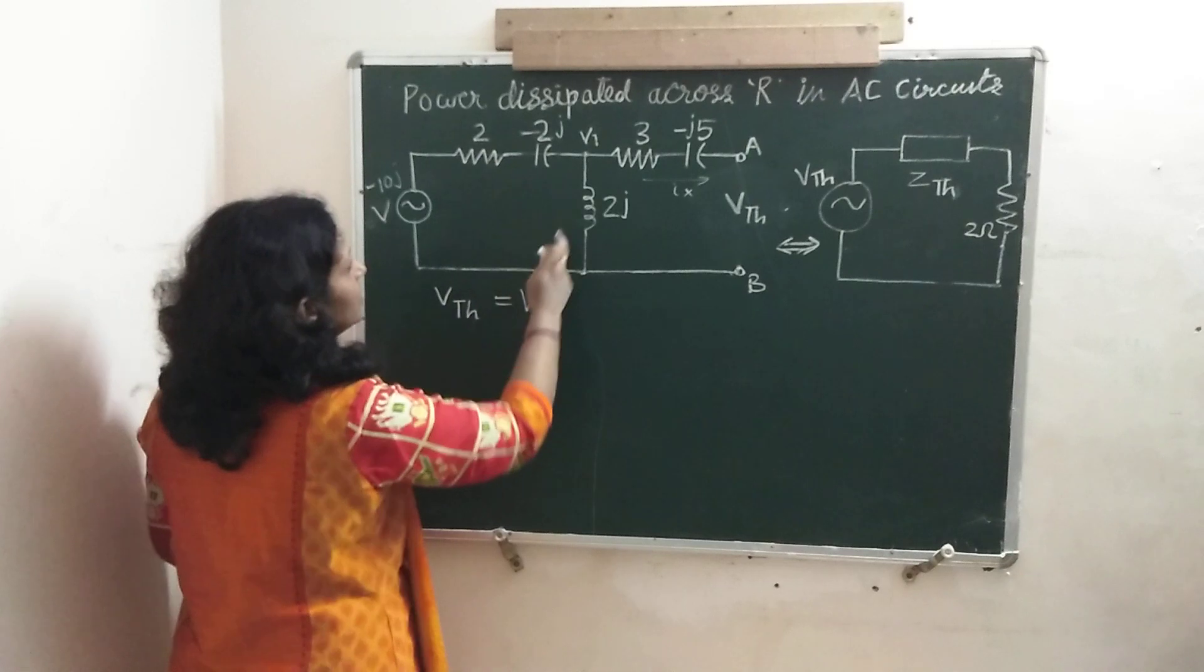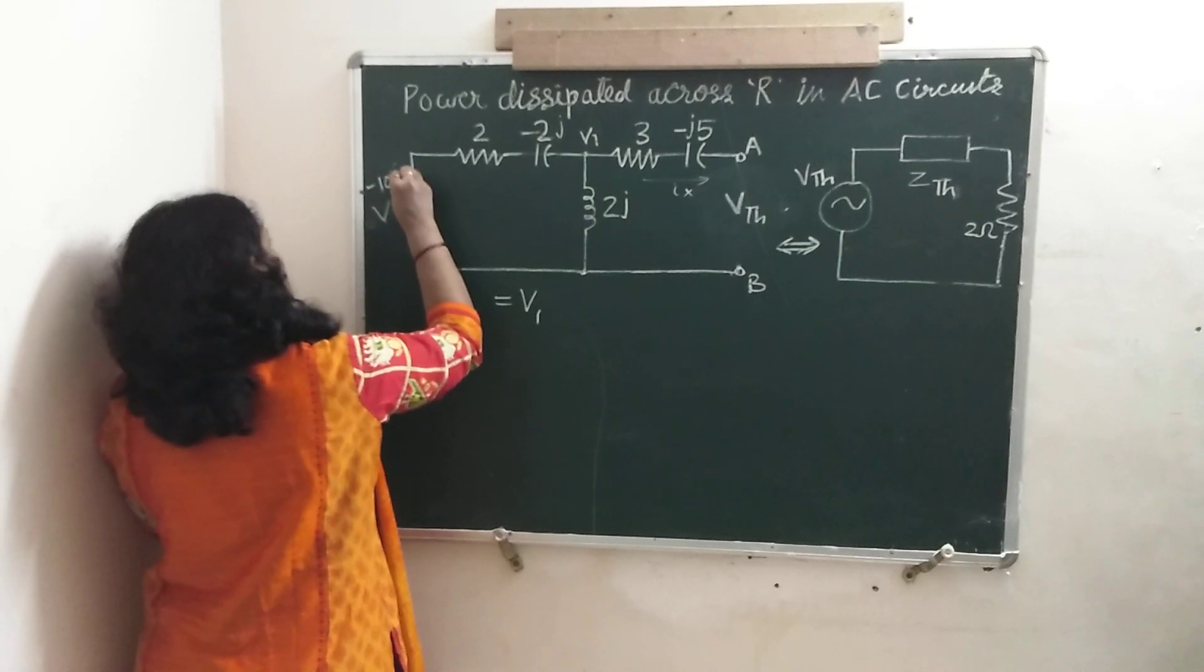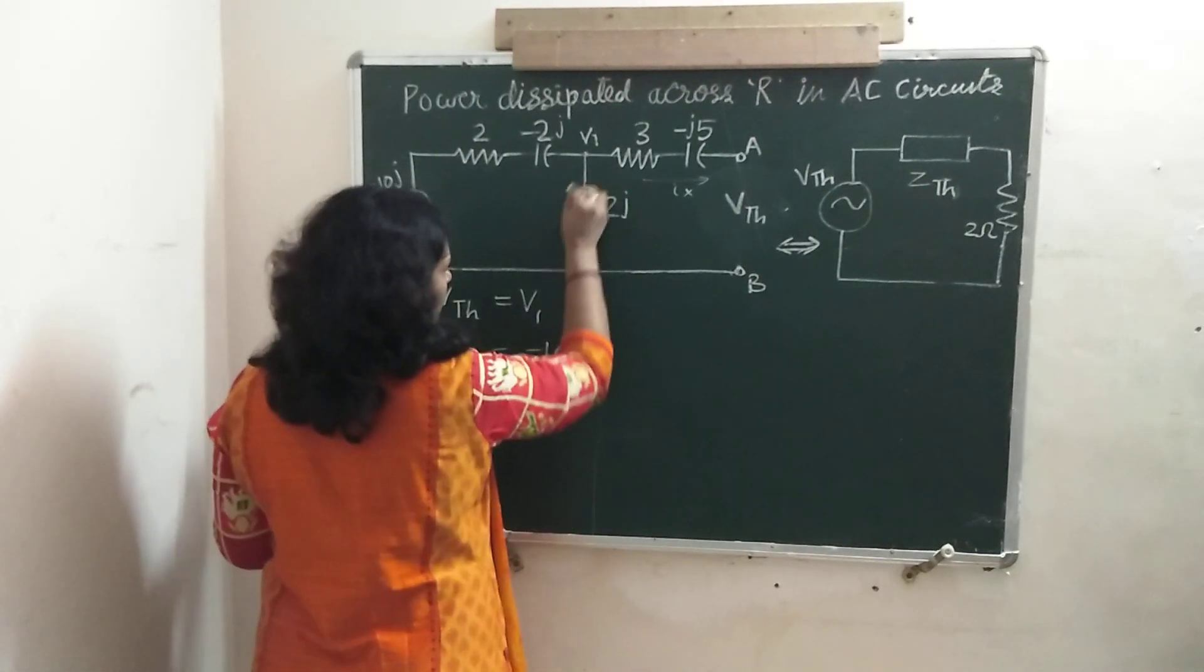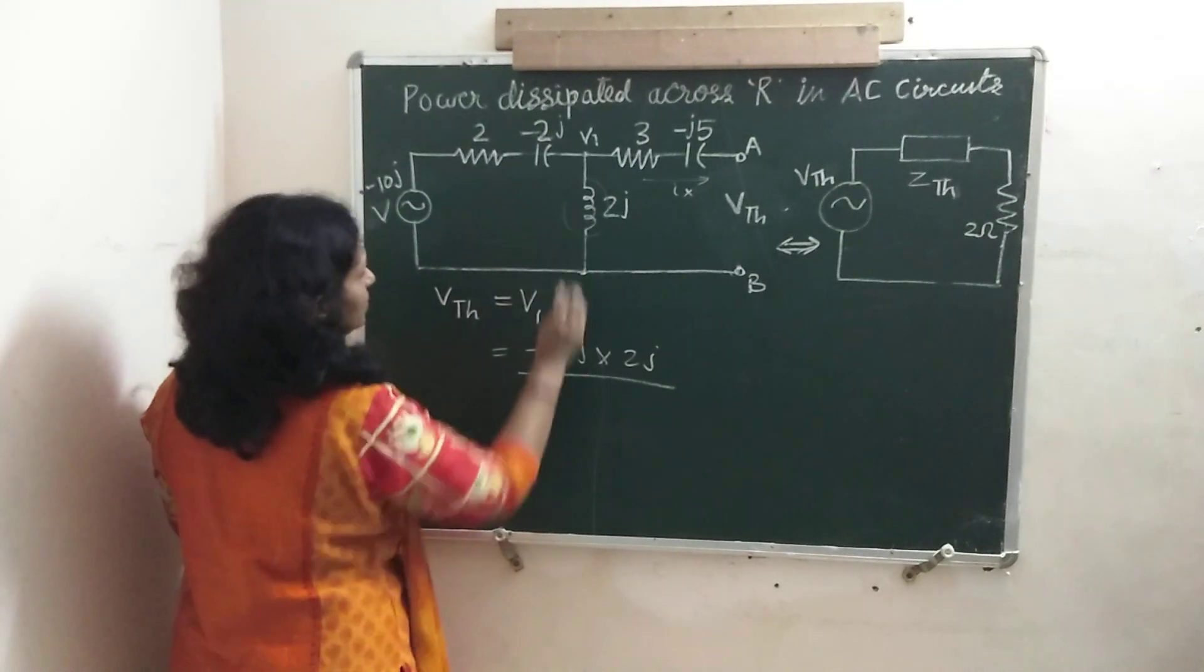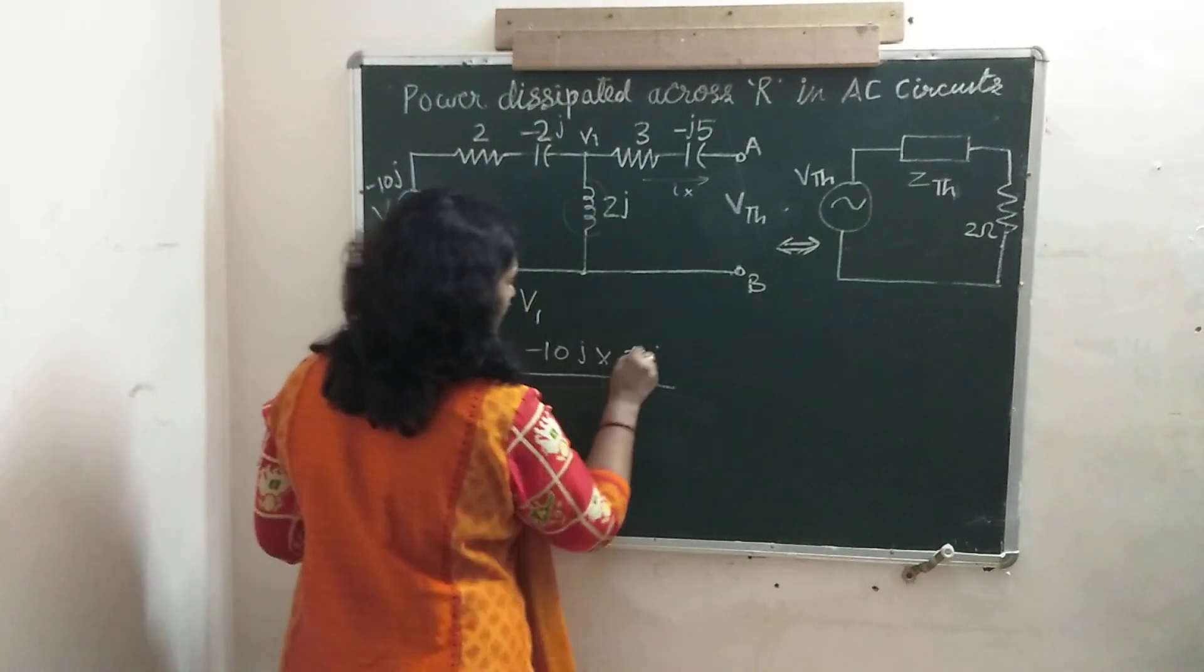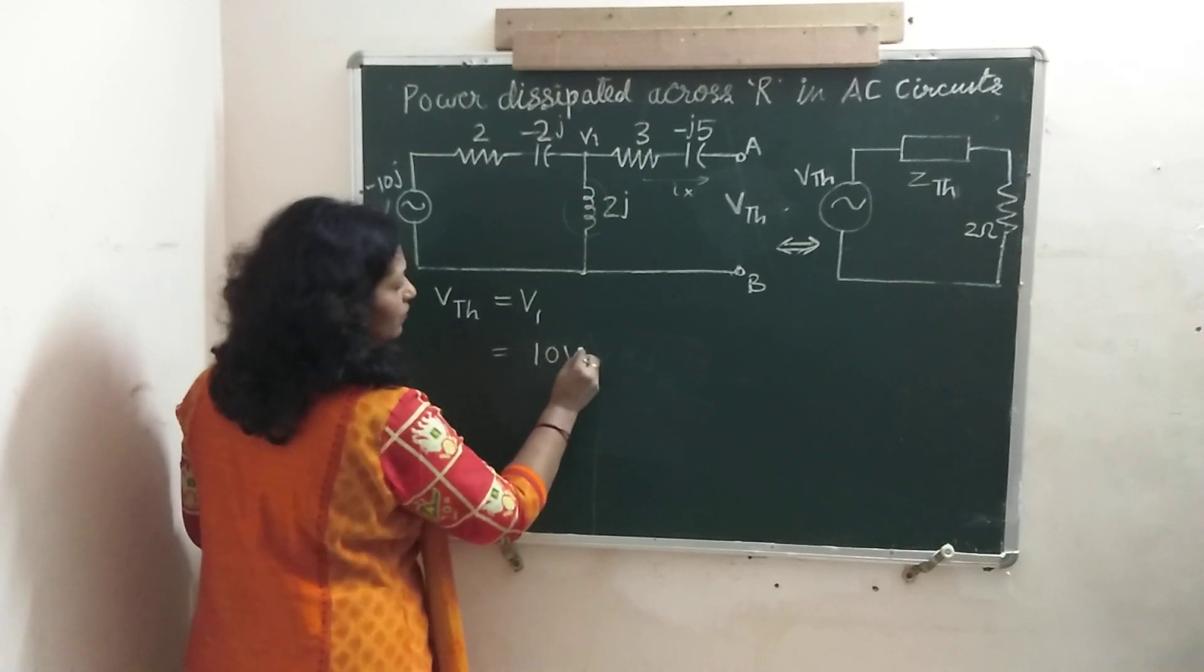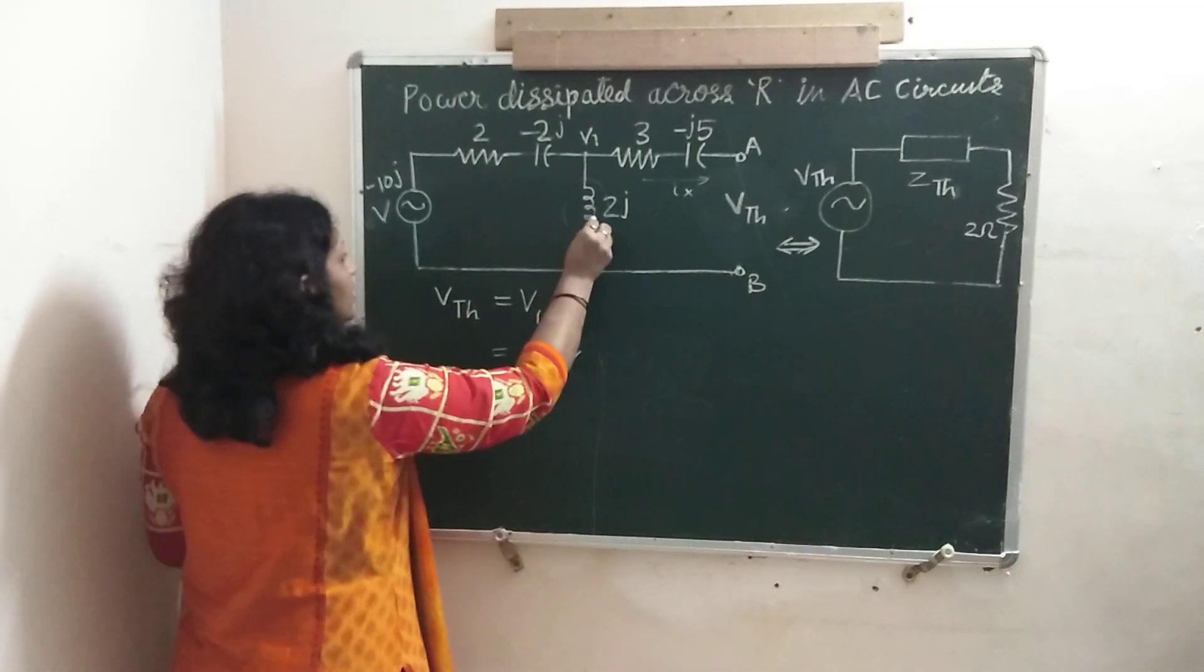So, to find this, we will apply the voltage division rule. This is our negative 10J voltage. So distribute this source voltage that is minus 10J across this and that will be our V1. So, 2J divided by the sum of these three, 2 minus 2J plus 2J. This will become 2 divided by 2, that is minus 10J square, that is plus 10. So plus 10 volts is the voltage across this 2J inductance.